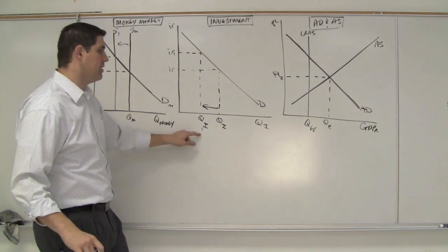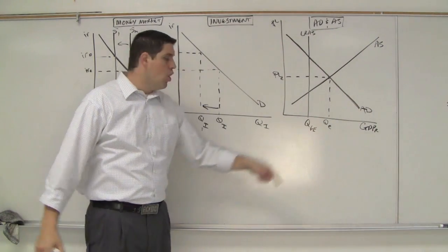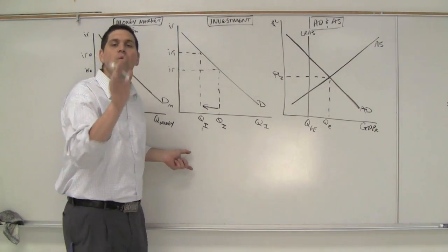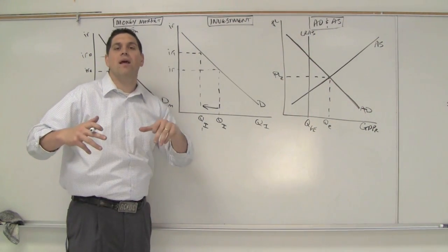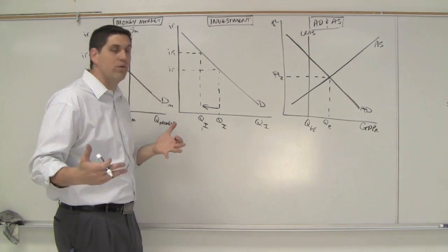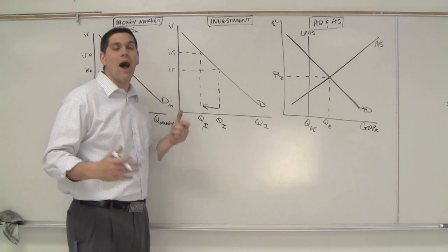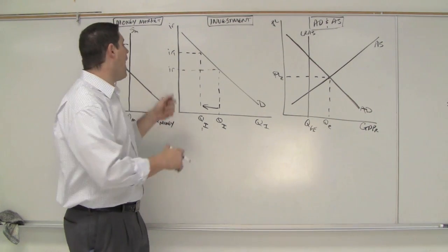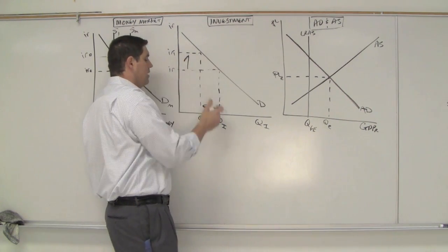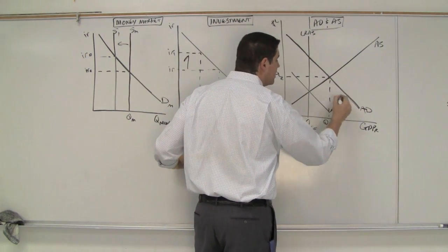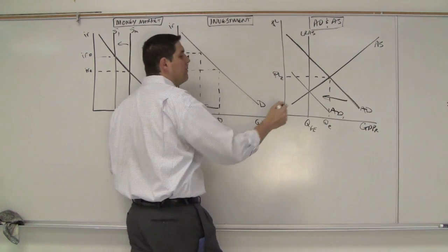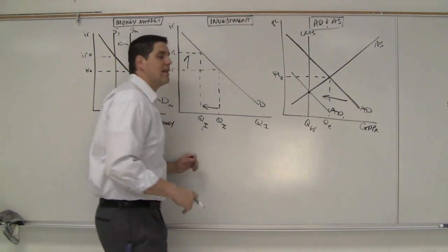is going to decrease the quantity of investment. Now, that's important because investment is a component of aggregate demand. When investment decreases, the reason is a higher interest rate. Firms are like, I'm not going to go borrow money. I'm not going to increase the size of my factory. I'm not going to do those things because the interest rates are so high. So, higher interest rates decrease investment. That would cause aggregate demand to shift to the left. When aggregate demand shifts to the left, it actually closes this gap and solves the problem.